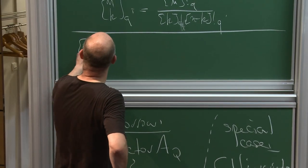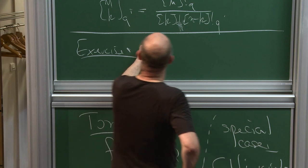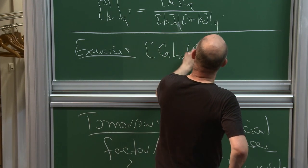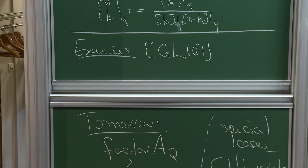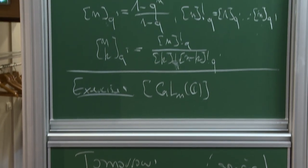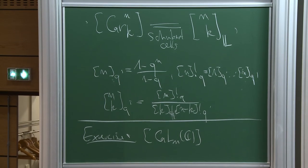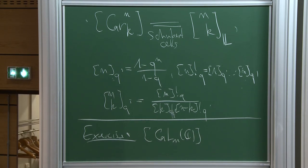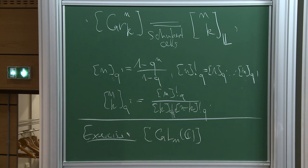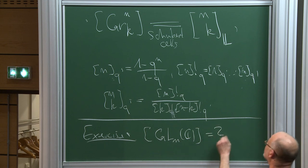Exercise: compute the motive of GL_m. Hint: think about an invertible matrix. The first column can be any nonzero vector. Fixing the first column, the second can be any vector except those in the span of the first, and so on. Writing this carefully in terms of stratifications, you can compute the motive of the general linear group.